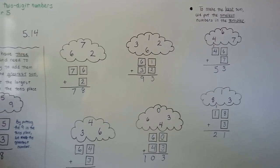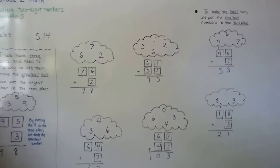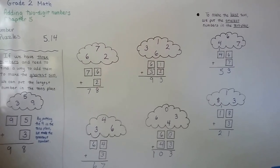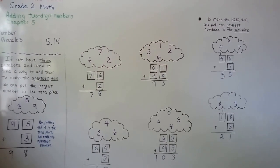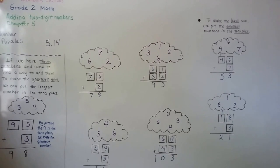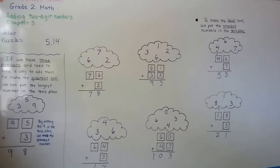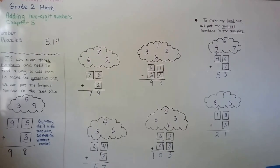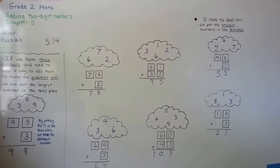So if you need to make numbers with the greatest sum, choose the largest number for the tens place. And if you need to make the least sum, choose the smaller number for the tens place. That's it for chapter five. We're going to go on to chapter six and talk about two-digit subtraction, and we're even going to do some regrouping to subtract. I hope I'll see you there!